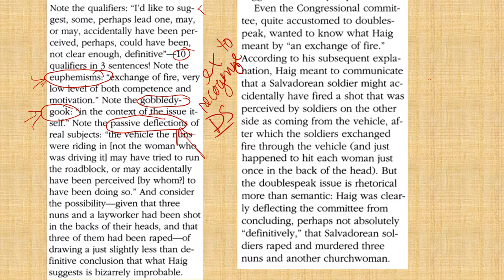Even the Congressional Committee, quite accustomed to doublespeak, wanted to know what Haig meant by 'an exchange of fire.' According to his subsequent explanation, Haig meant to communicate that a Salvadorian soldier might accidentally have fired a shot that was perceived by soldiers on the other side as coming from the vehicle, after which the soldiers exchanged fire through the vehicle and just happened to hit each woman just once in the back of the head. Yeah, right.